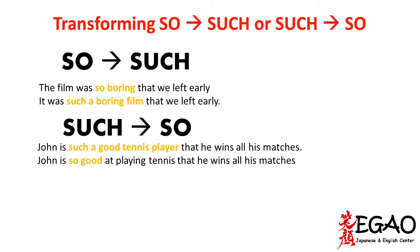To transform 'so' into 'such,' remember that 'such' needs a noun phrase. So we ask: what is boring in the sentence? The film. So we change it to: 'It was such a boring film that we left early.' 'Such a boring film' is the noun phrase. Going the other way — 'John is such a good tennis player that he wins all his matches' — 'such a good tennis player' is the noun phrase, and to transform into 'so,' we need 'so' with an adjective or adverb.